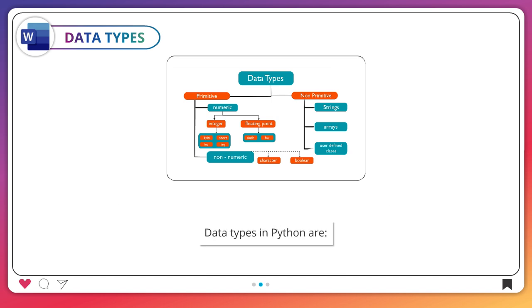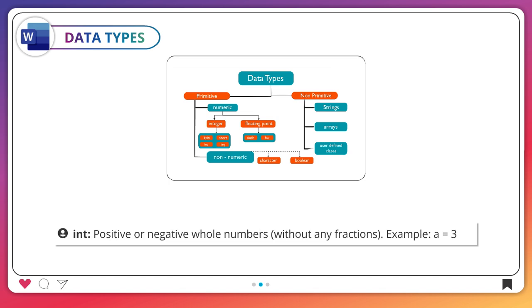Data types in Python include int: positive or negative whole numbers without any fractions. Example: a = 3. Float: